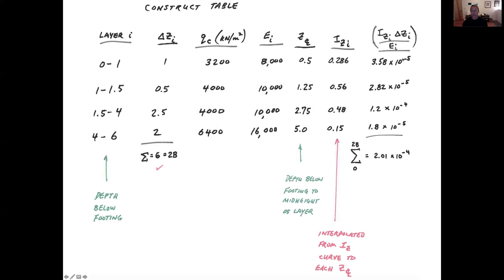And mathematical operation will allow us to complete this table. And we end up with values looking like this 3.6 times 10 to the minus 5, 2.8 times 10 to the minus 5, 1.2, and so on down here. So the summation from 0 to b is simply the summation of these values. And we end up with 2.01 times 10 to the minus 4 as a numerical value at this stage.